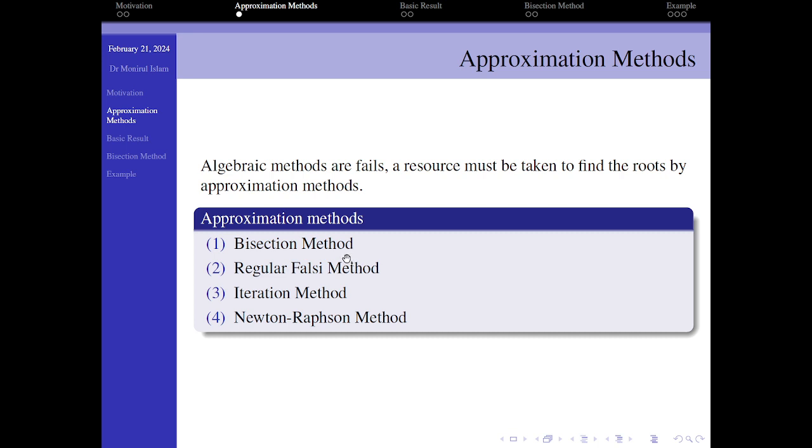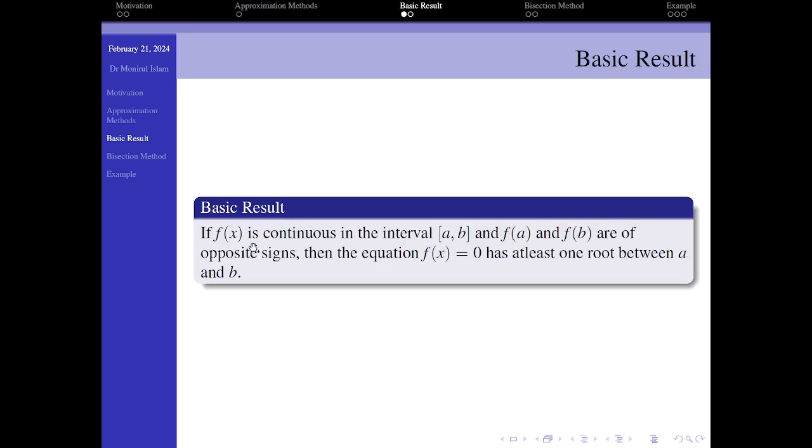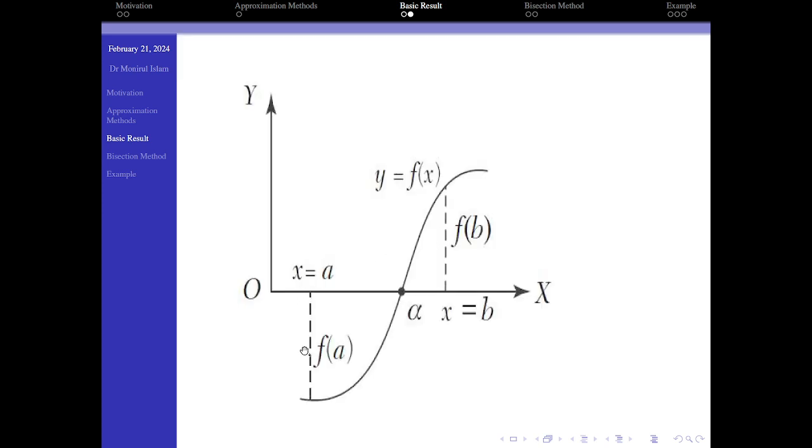Before I go to the method, I just want to mention a basic result. That is, if f(x) is continuous in an interval [a, b], and f(a) and f(b) are of opposite sign - we can easily see that f(a) is negative and f(b) is positive.